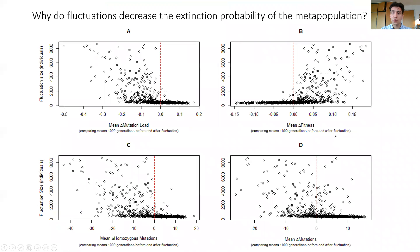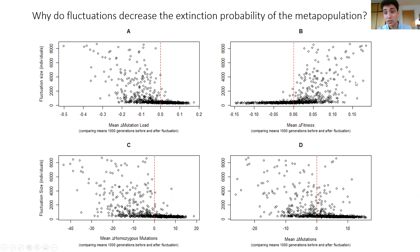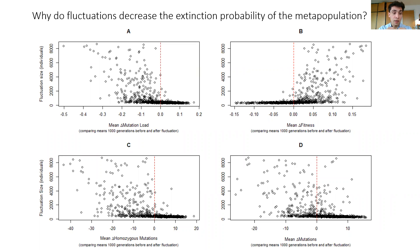We are starting to understand why this is the case. If you take a large number of replicates and look at the mutation load before and after a fluctuation, you can see that fluctuations typically decrease the mutation load. And this is what gives rise to the increase in fitness that you see after a fluctuation. This decrease in the mutation load happens because fluctuations in the population level result in a burst of gene flow when you have recolonization — individuals spread throughout the population, giving a burst of gene flow that allows the number of homozygous mutations to decrease.